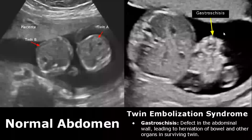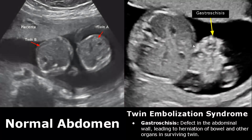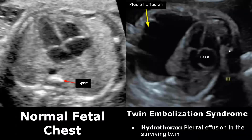Abdominal abnormalities include gastroschisis, in which there is a defect in the abdominal wall causing herniation of usually the bowel and other organs — here the small bowel is seen outside the abdomen. The surviving twin may also suffer from hydrothorax, which is basically a large pleural effusion.